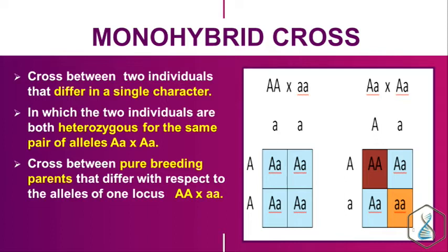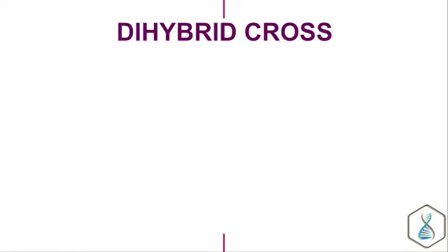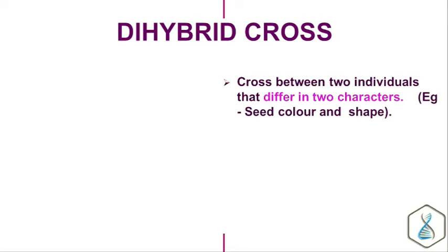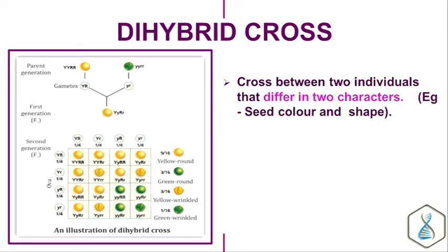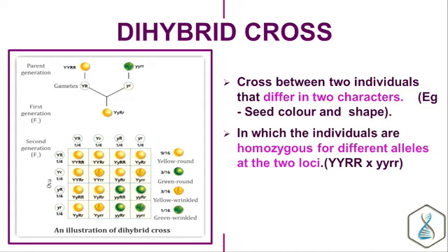What is a dihybrid cross? A dihybrid cross is a cross between two individuals that differ in two characters. For example, considering two characters — seed color and seed shape — we cross individuals with yellow round phenotype with green wrinkled phenotype. The cross between yellow round and green wrinkled phenotypes, which differ for two characters like seed color and seed shape, is referred to as a dihybrid cross.